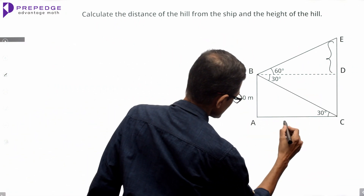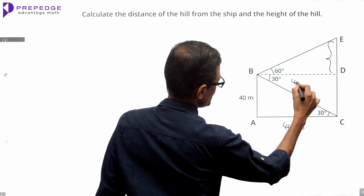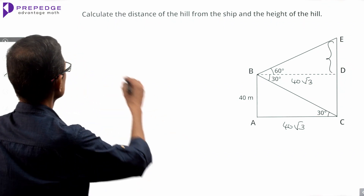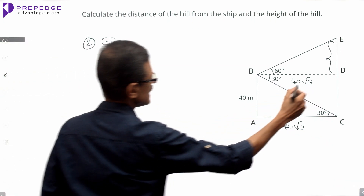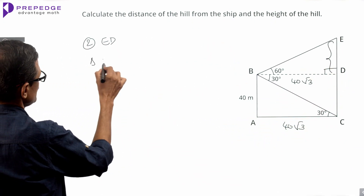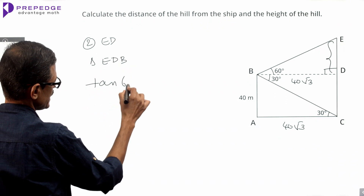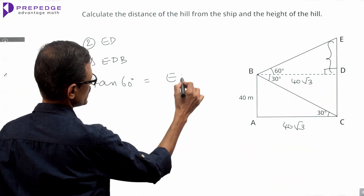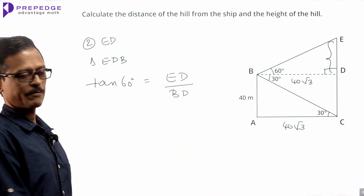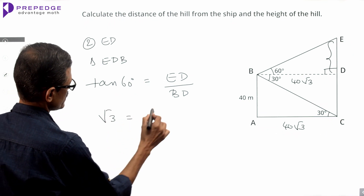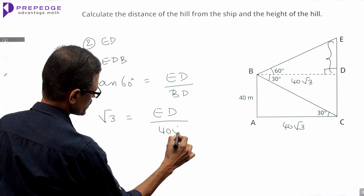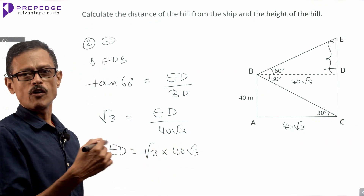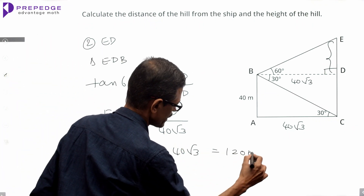Step 2: Computing ED. Looking at right triangle EDB, tan 60° equals the opposite side ED divided by adjacent side BD. Tan 60° equals root 3. BD equals 40 root 3, so ED equals root 3 times 40 root 3, which equals 40 times 3, which equals 120 meters.